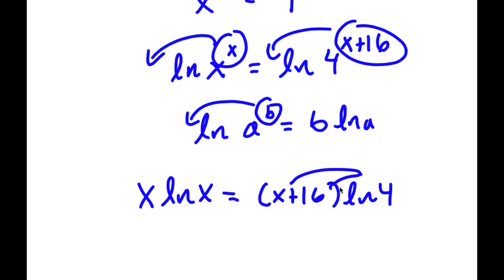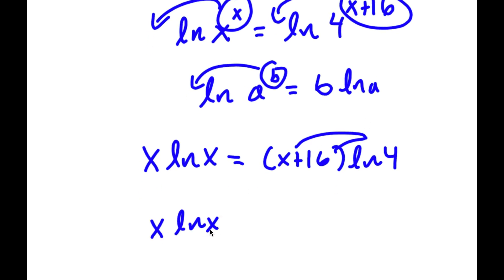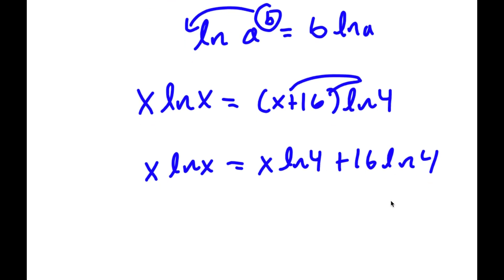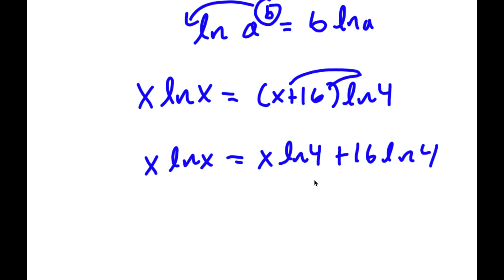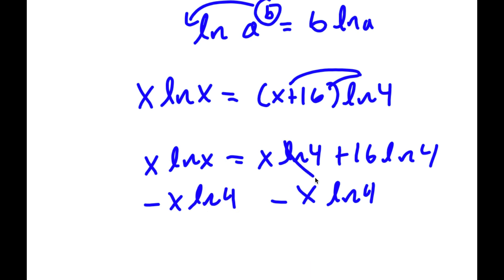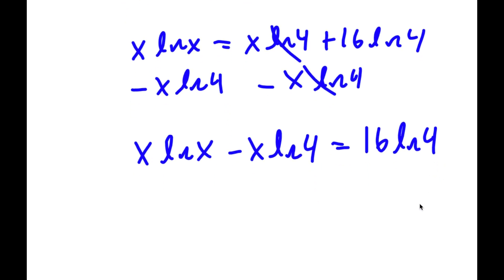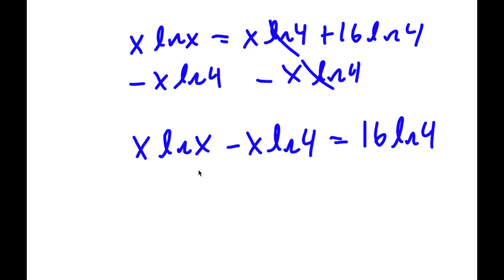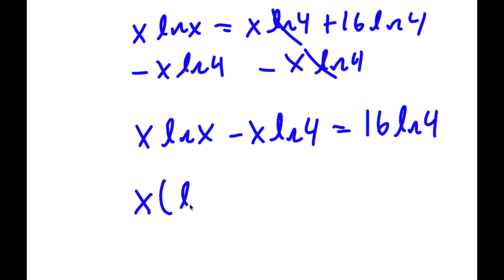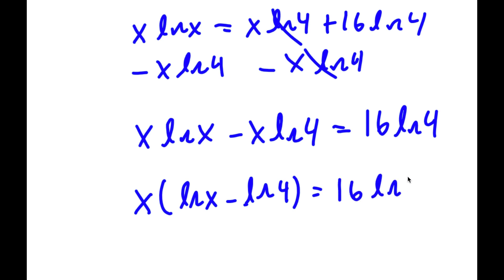Distributing the ln 4, I get x times ln 4 plus 16 times ln 4. Subtracting x times ln 4 from both sides, those cancel out, and I get x times ln x minus x times ln 4 is equal to 16 times ln 4. Factoring out x gives x times ln x minus ln 4 is equal to 16 times ln 4.